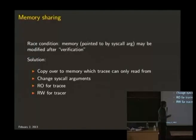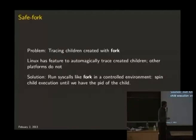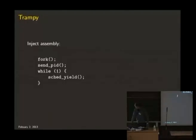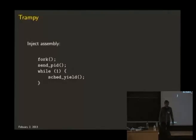This is a solution to verifying the argument of open and making sure it isn't changed by some thread. For the fork problem — when a new child is created it doesn't trace automatically on BSD — you need to execute the fork, clone, or whatever system call creates a process in a safe environment so you can attach to it and trace it. What we did is inject some assembly into the process we're tracing, change the instruction pointer to run that assembly, and the assembly executes a fork call, sends the new PID so you can attach to the process, then does nothing until you attach and modify the instruction pointer to move away from the loop.